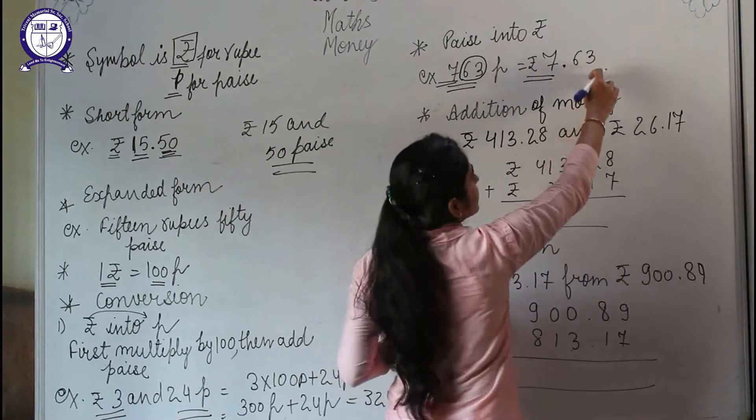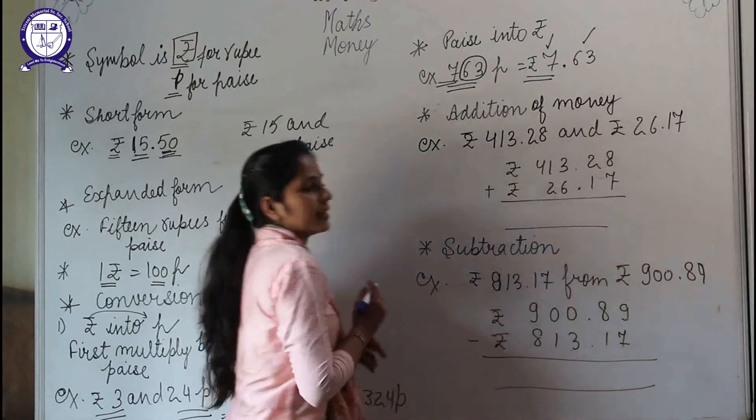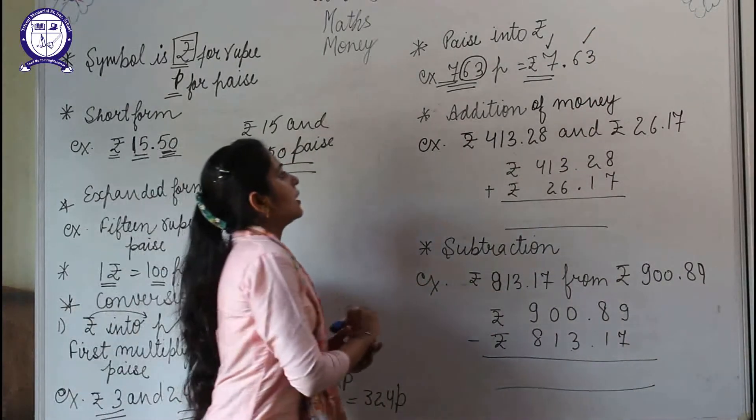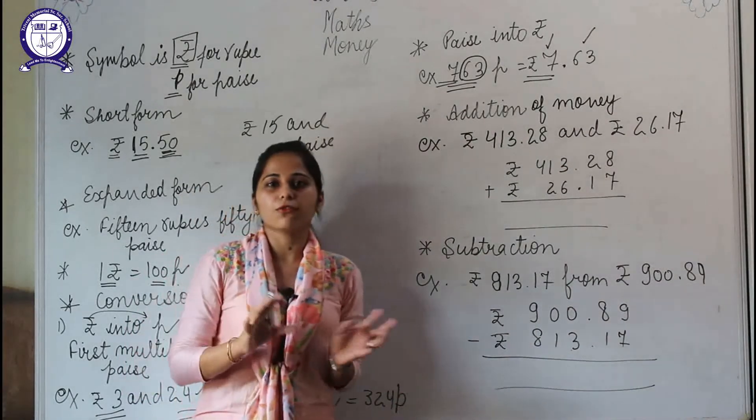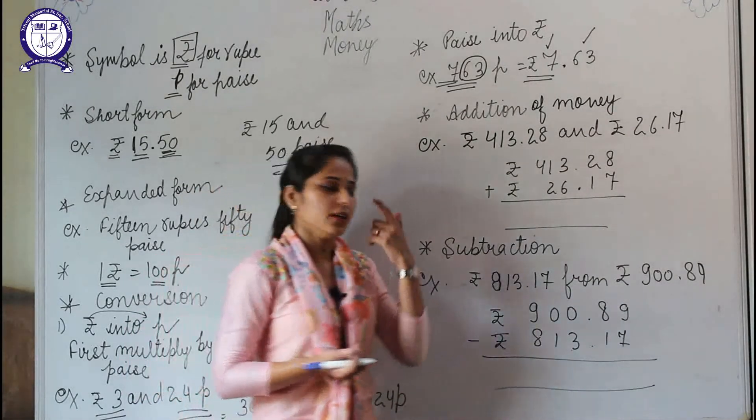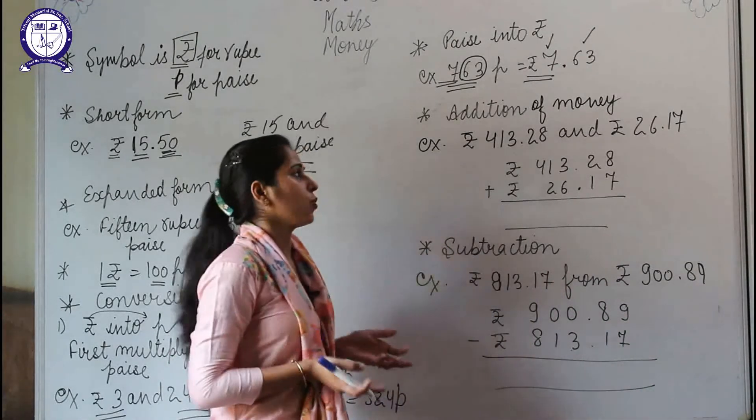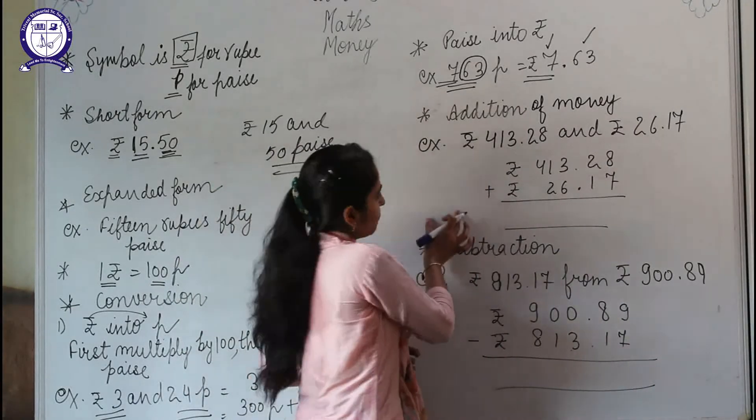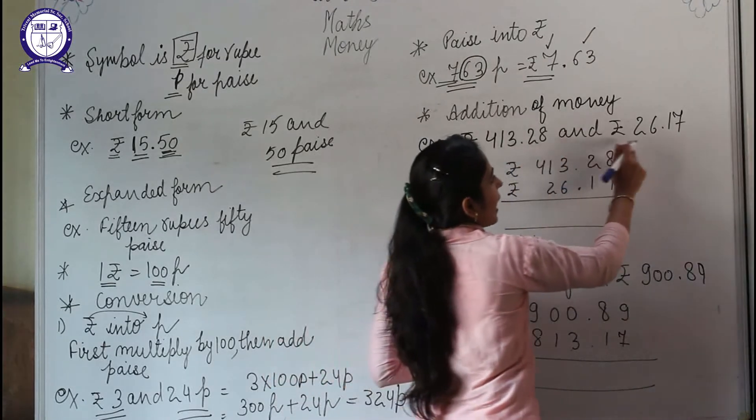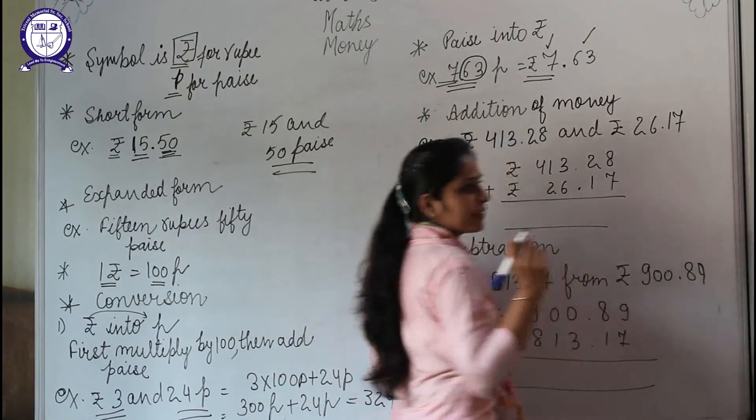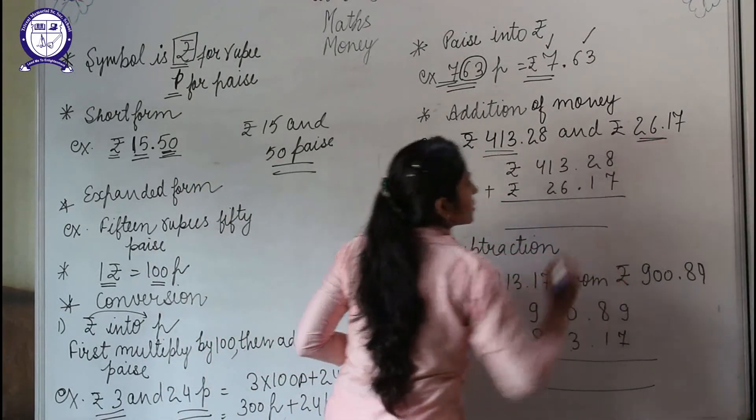Now, addition of money. Sometimes you go to a shop and buy three or four things, and then you ask for the bill. How does the shopkeeper prepare the bill? That is preparing a bill or addition of money. Here we are having an example of ₹413.28 and ₹26